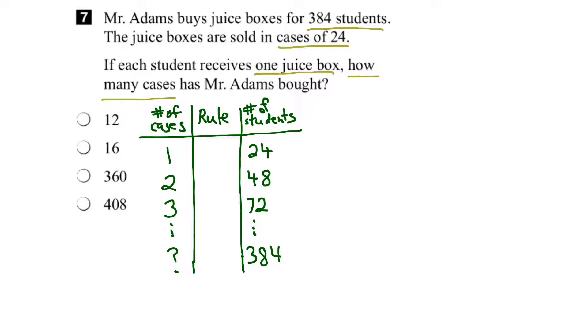But no worries, what we're interested in here is the rule that relates the number of cases to the number of students. When we look at it and say, how did we get from 1 to 24? We multiplied by 24. How did we get from 2 to 48? We multiplied by 24. How did we get from 3 to 72? We multiplied by 24.